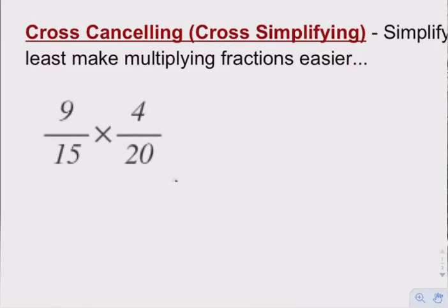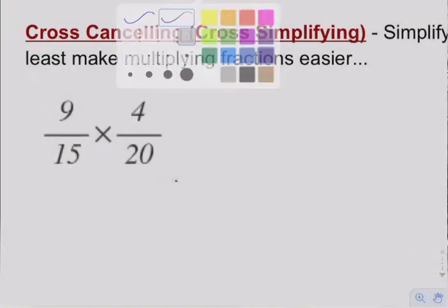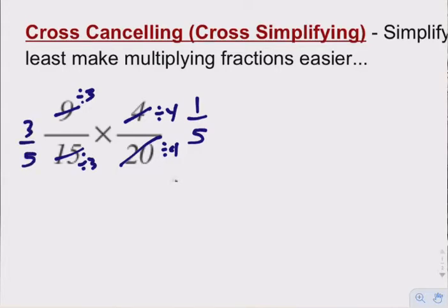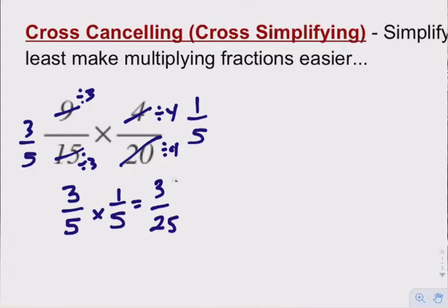Take our product: 9/15 times 4/20. When we simplify first — 4/20, divide top and bottom by 4, and get 1/5. Then 9/15, divide top and bottom by 3, and get 3/5. So 9/15 times 4/20 is the same as 3/5 times 1/5, which equals 3 times 1 is 3, and 5 times 5 is 25 — so 3/25. You always want to simplify first.